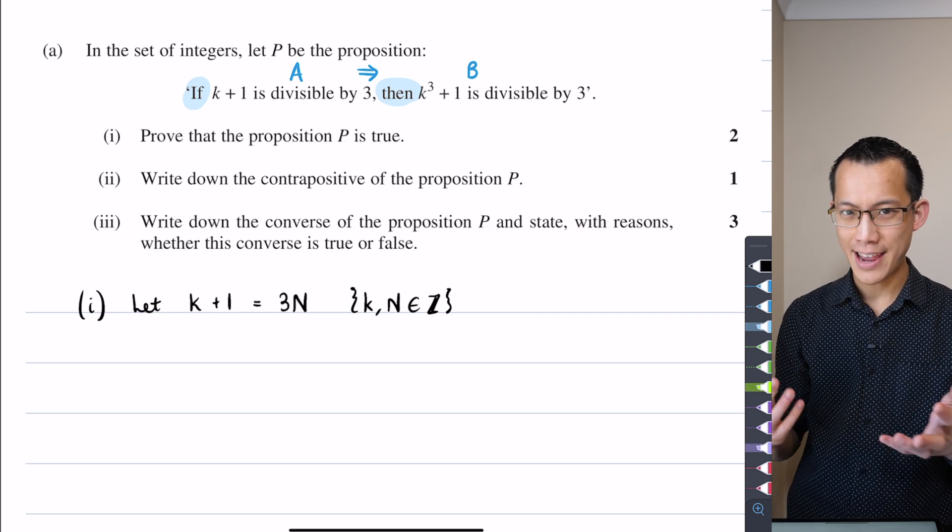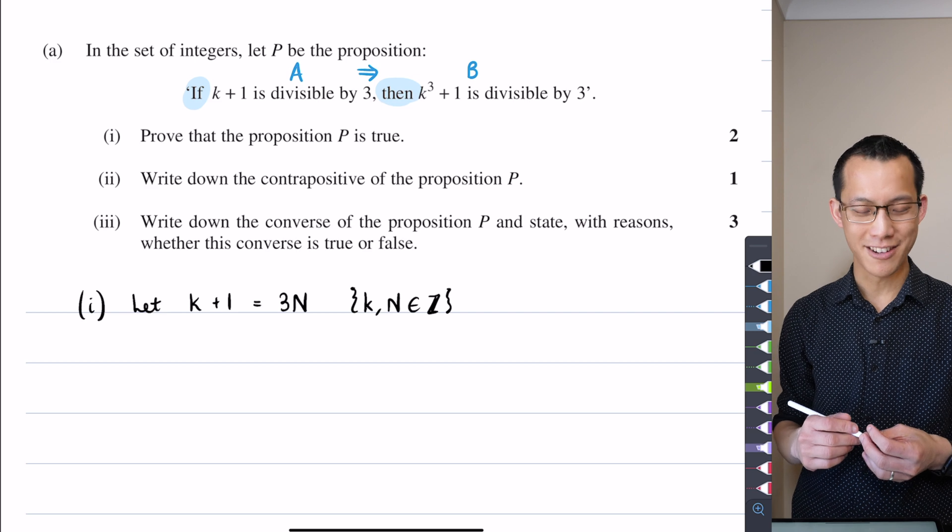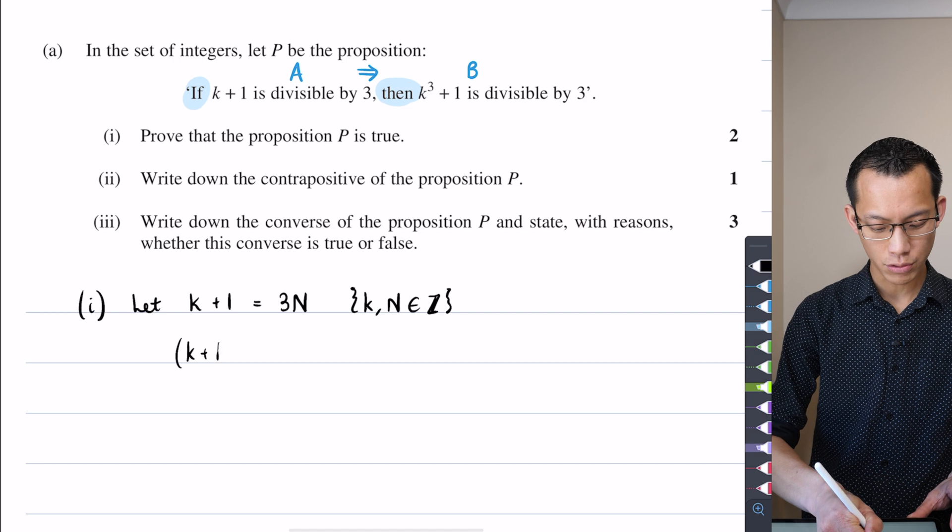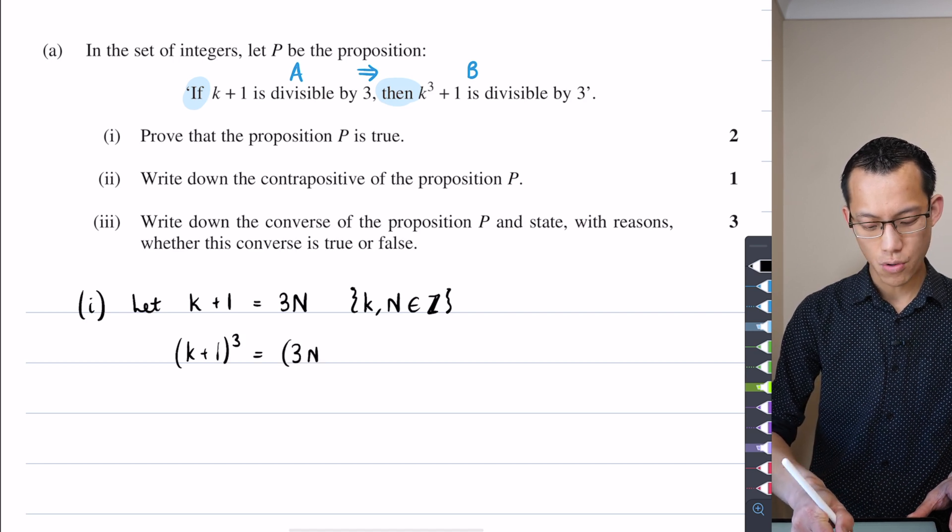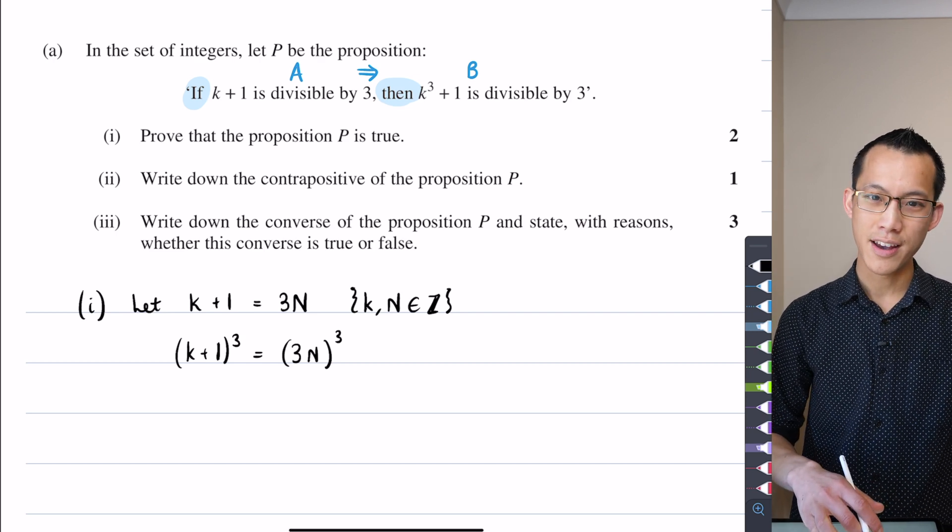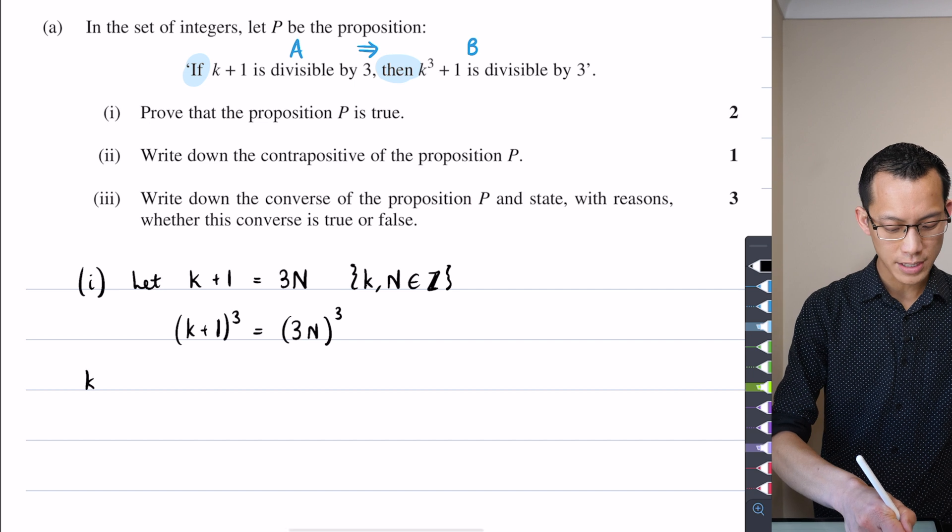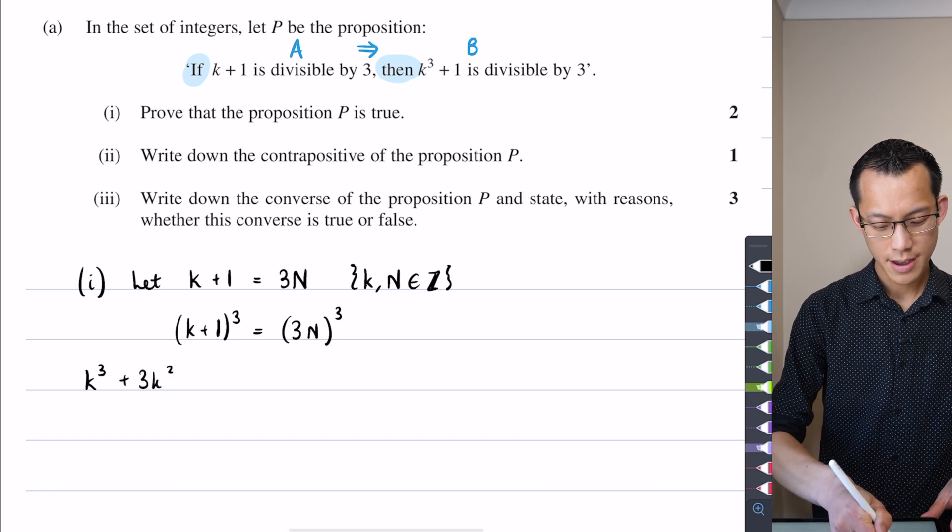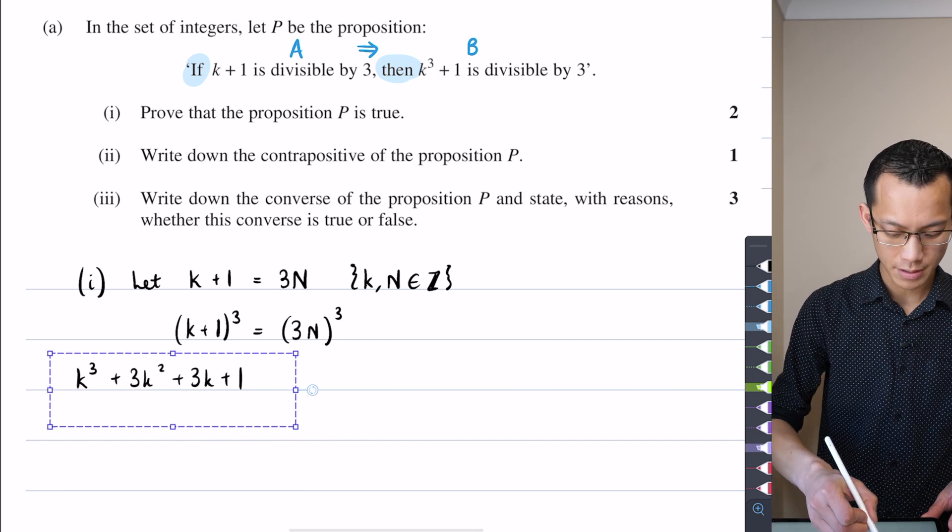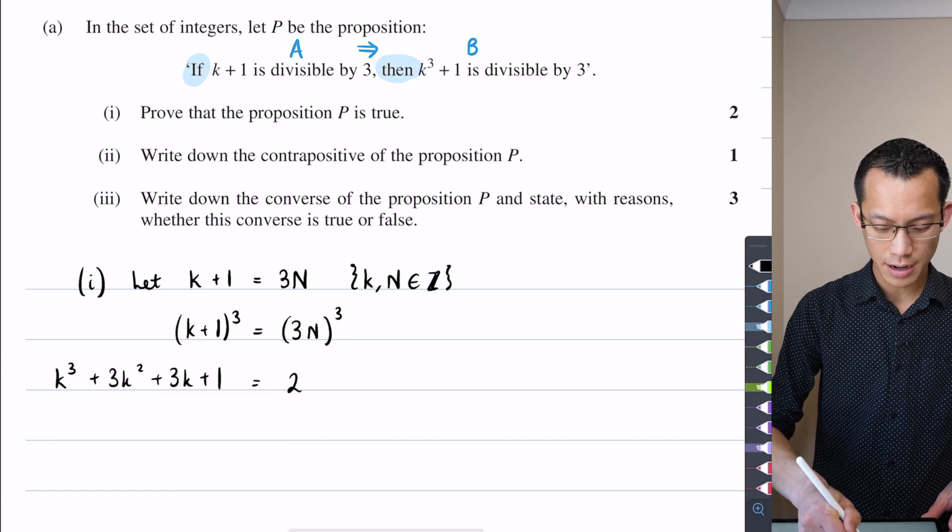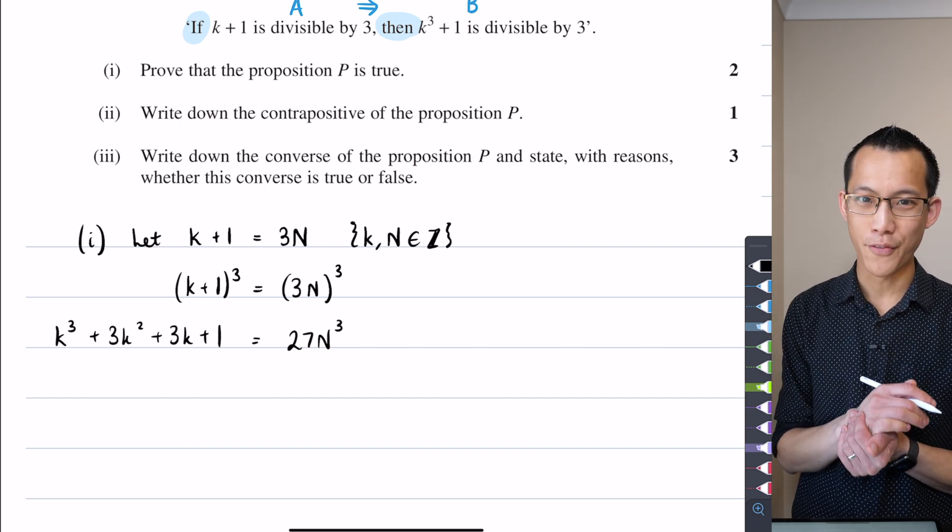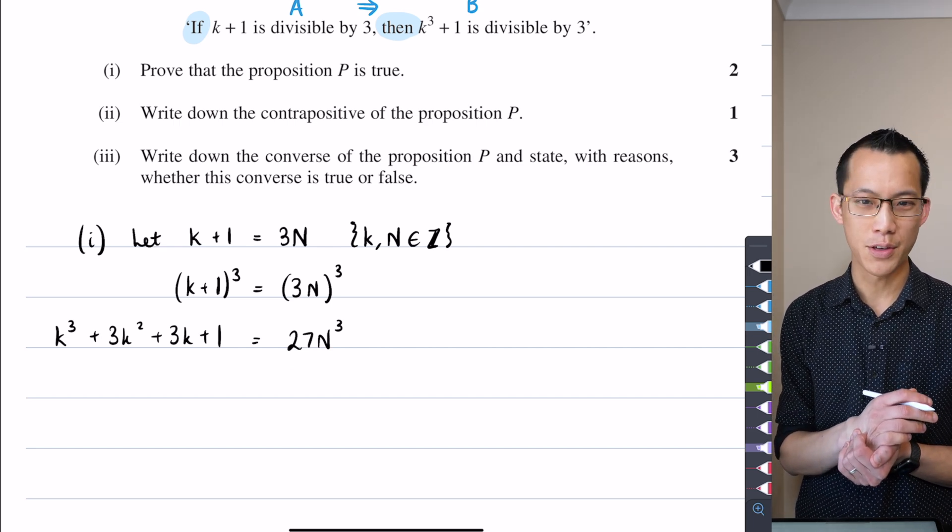So in order to get from this k statement, I think I'm going to need to cube something. Therefore, I'm just going to cube both sides and that'll give me k plus 1 all cubed equals 3n all cubed. You're going to need to be careful with expanding this binomial expression on the left. Hopefully you're getting something like this: k cubed plus 3k squared plus 3k plus 1. And on the right hand side, I'm going to get 27n cubed.